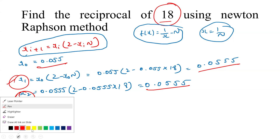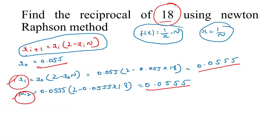Since the successive approximations are equal, we stop here. Hence, the reciprocal of 18, i.e., 1/18 = 0.0555. The root of the equation f(x) = 1/x - n is 0.0555. If you have any doubts, please comment below. I will also provide the notes in the description.